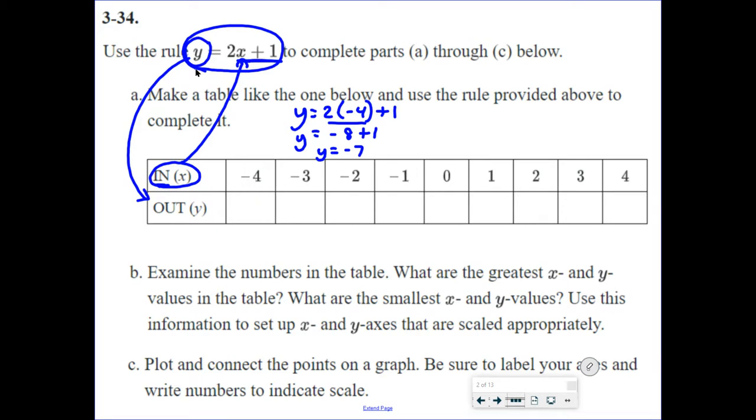So when X is negative 4, Y equals negative 7. Now, I repeat the process, but this time X is negative 3. So I write the thing, right? Y equals 2 times, this time negative 3 plus 1. 2 times negative 3 is negative 6 plus 1. Negative 6 plus 1 is negative 5. So when X is negative 3, Y is negative 5. And I continue this process. Now, if X is 2, I plug 2 into the equation. Y equals 2 times negative 2 plus 1. 2 times negative 2 is negative 4 plus 1. Negative 4 plus 1 is negative 3.